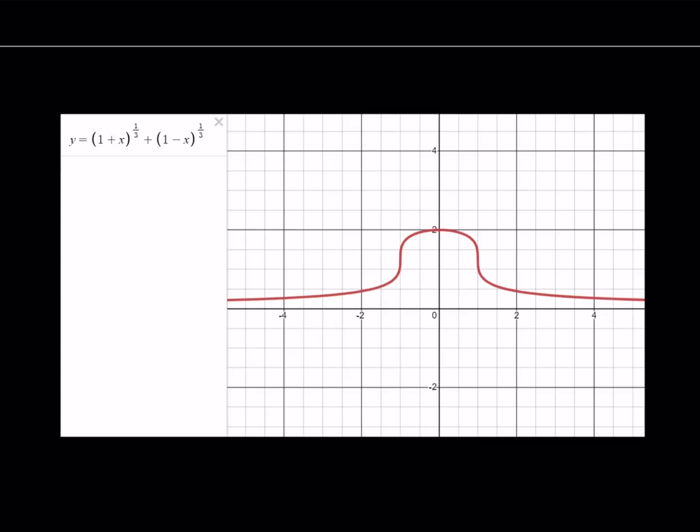Why? Because if you replace X with negative X, you pretty much get the same thing: (1 minus X)^(1/3) + (1 plus X)^(1/3) from commutative property. You basically get the same thing.